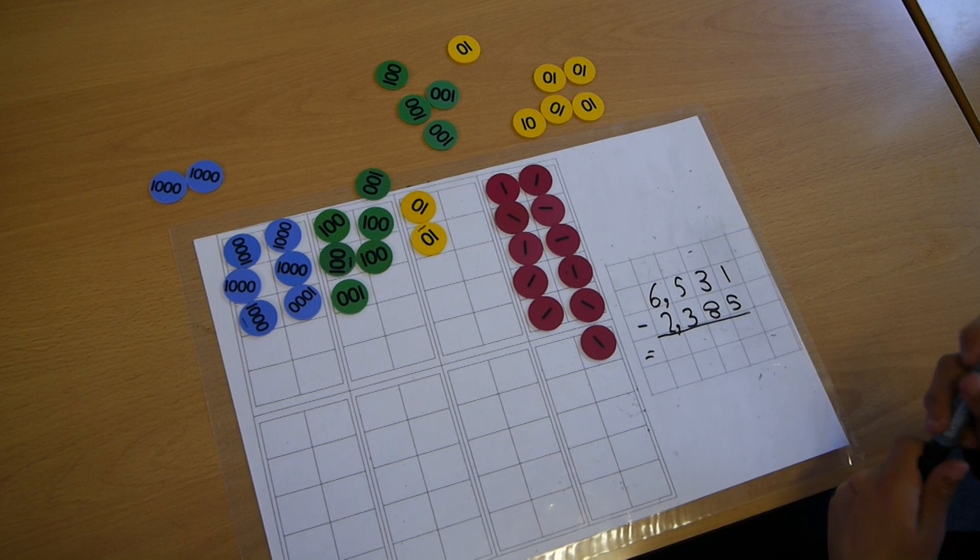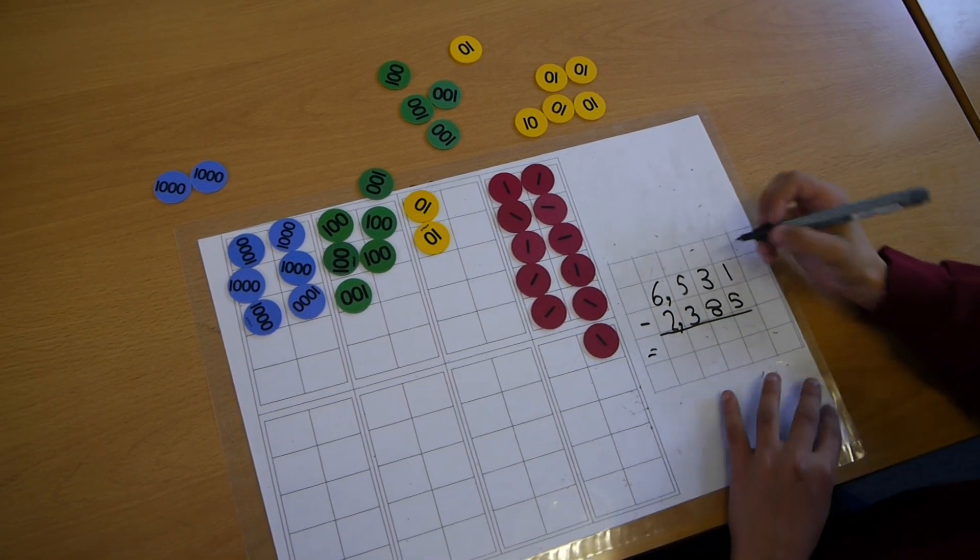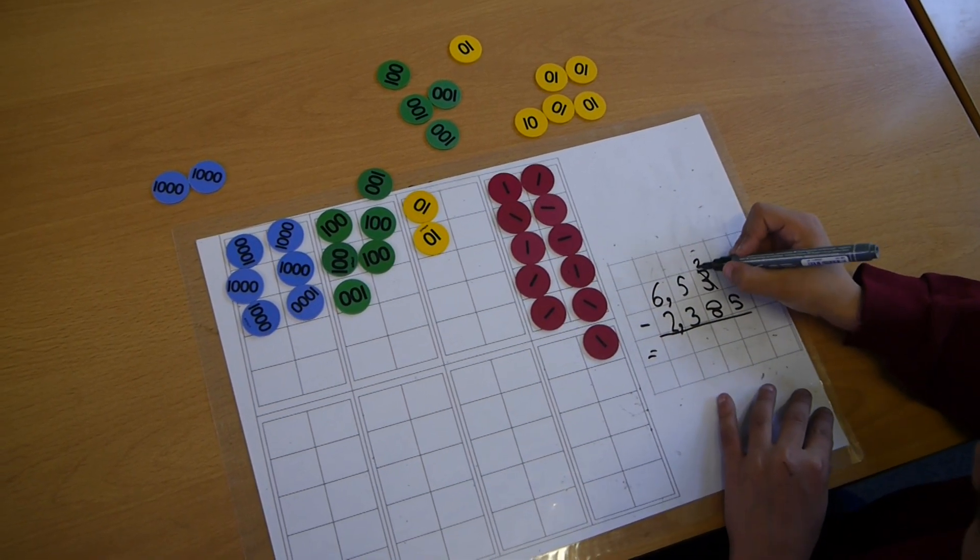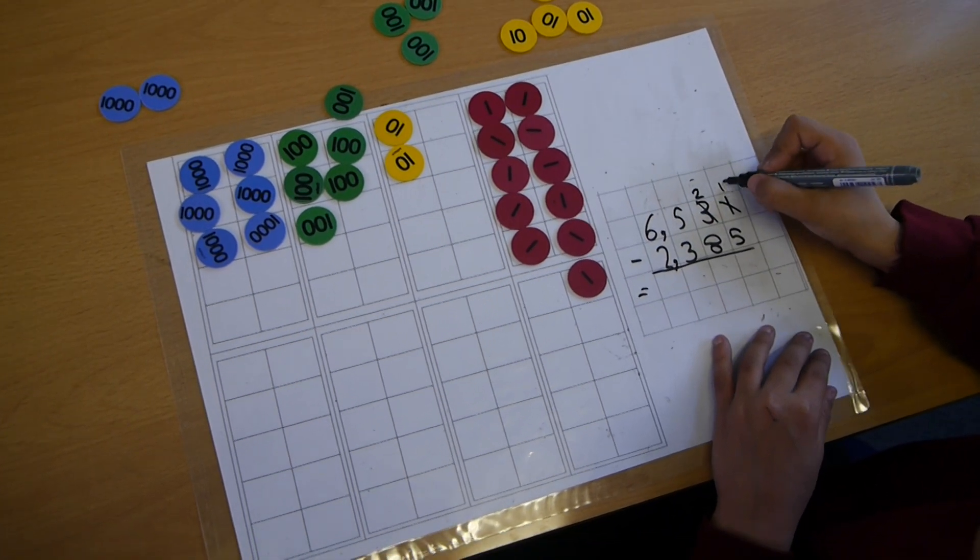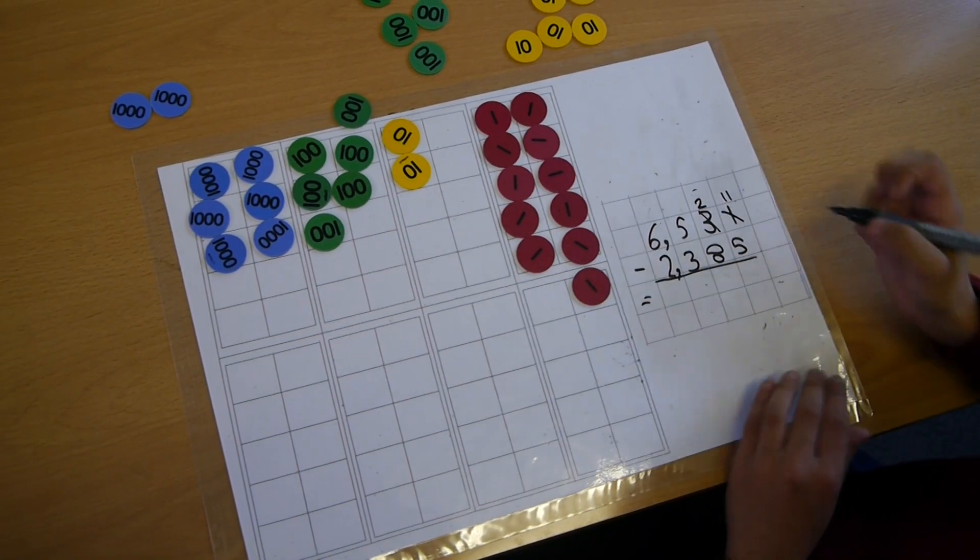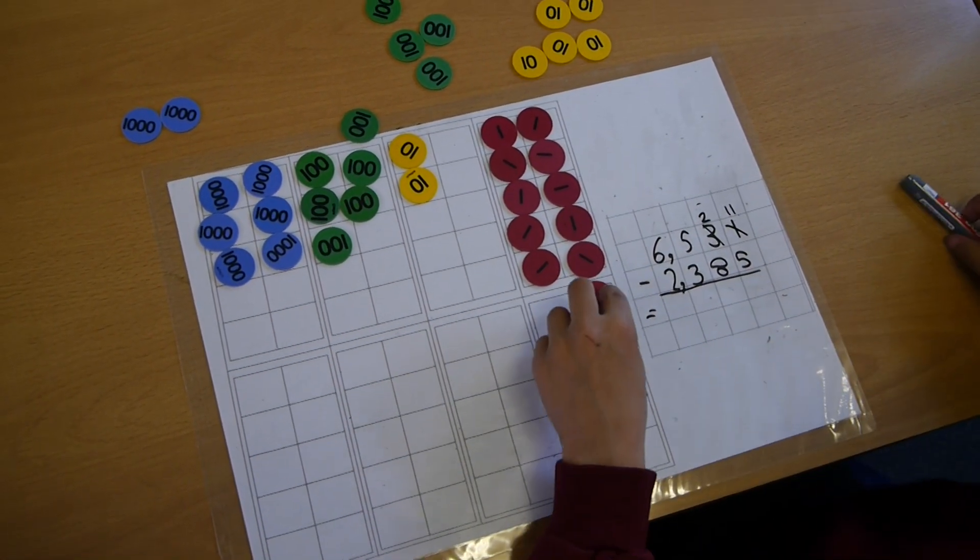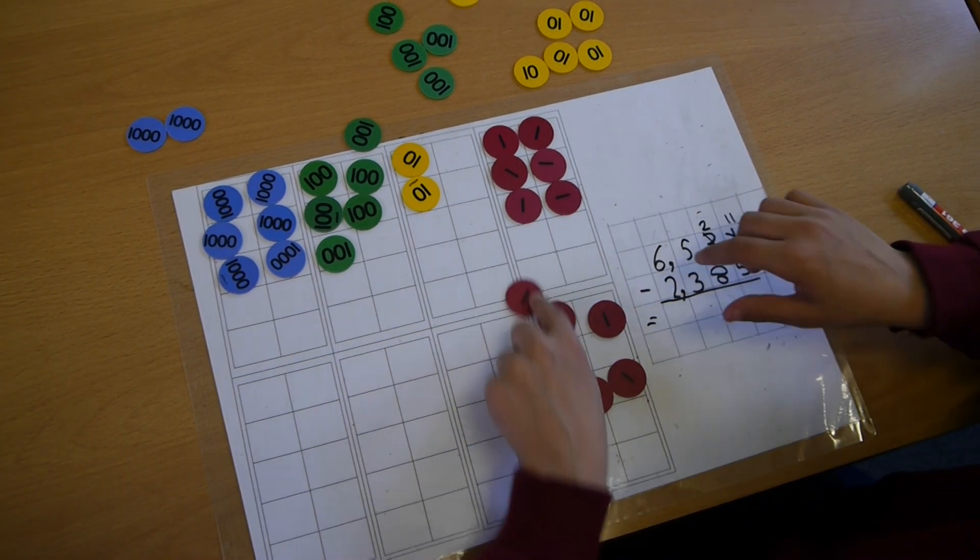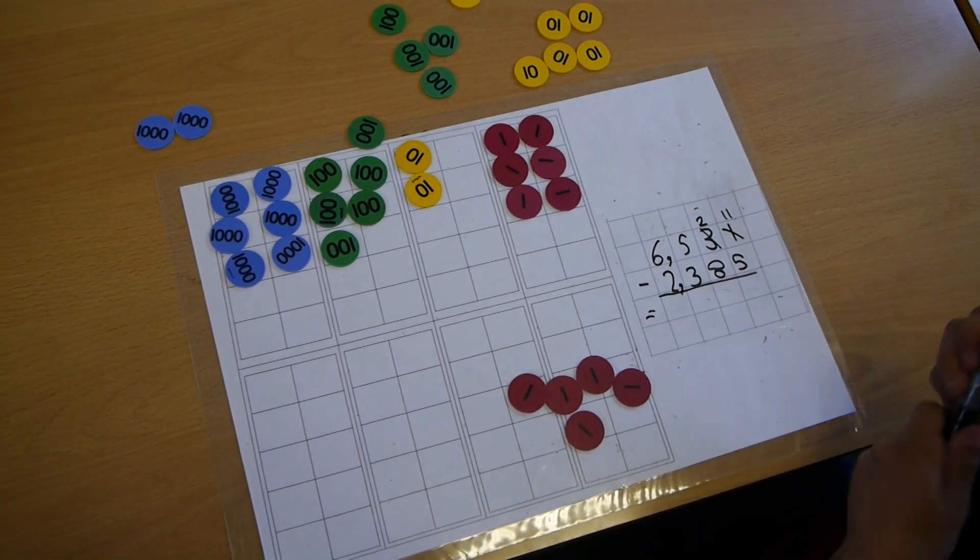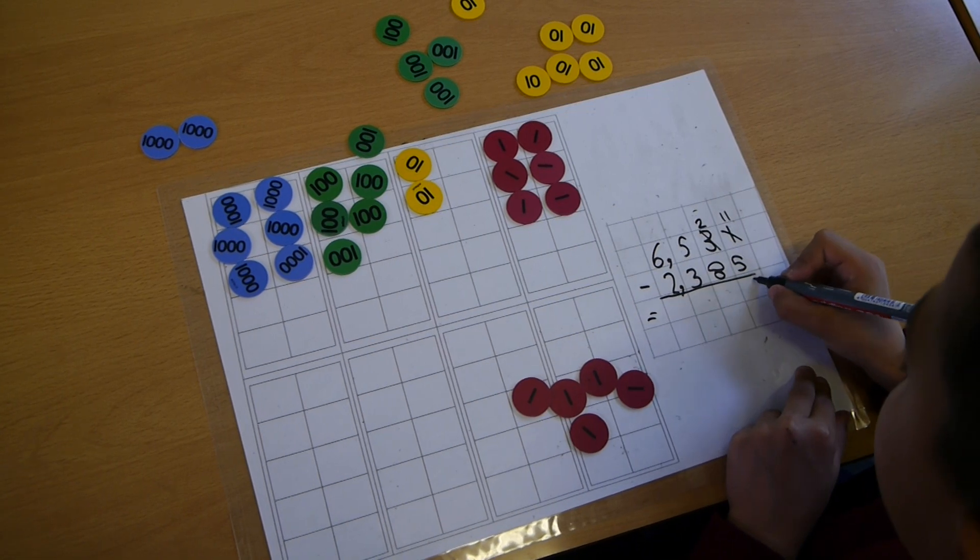Now I need to record on here. We've taken that away. We've changed that to 2. We've taken that away and now we've got 11. So now I need to take away 5. And the answer for the units is 6.